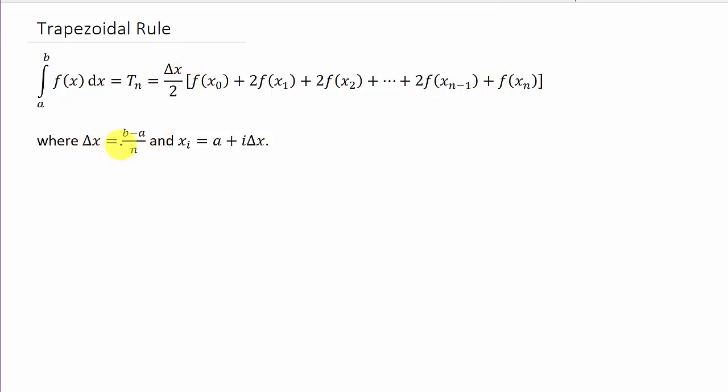And delta x is b minus a over n. There's b and there's a. n will be given to you. x sub i, well that's this x naught, x1, x2, so on.